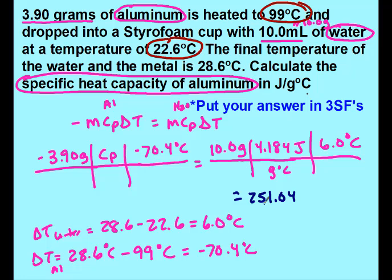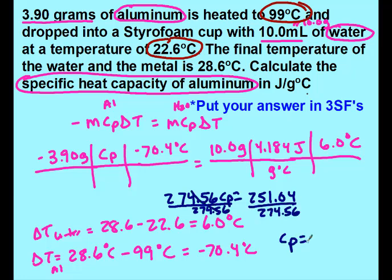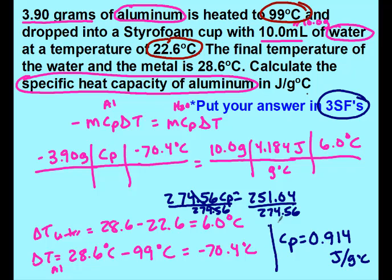Everything on the left: negative 3.90 times negative 70.4 times x equals 274.56x. Remember, you can't have a negative at this line — your negatives should have already canceled out. To solve for cp, I divide both sides by 274.56. Rounding to three sig figs, I get 0.914 J/g·°C.